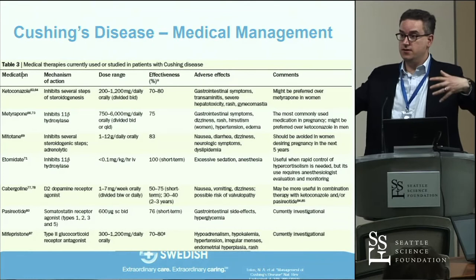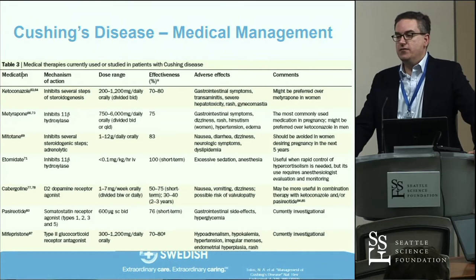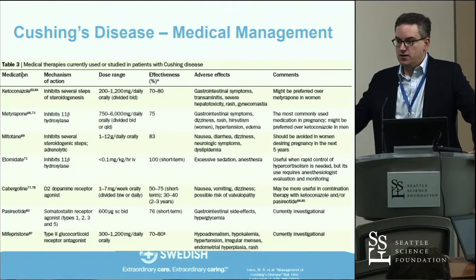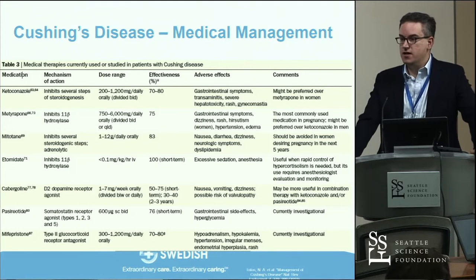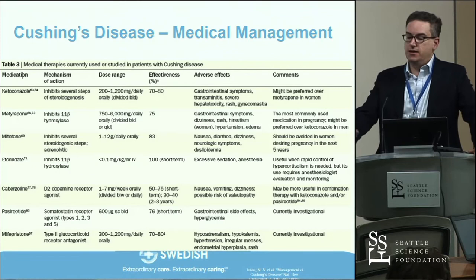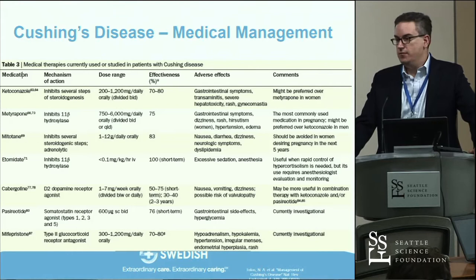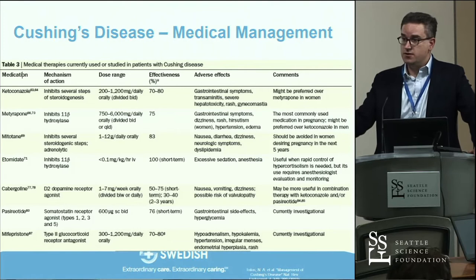For a patient who is image-negative and you've done a hemihypophysectomy based on IPSS results without finding anything obvious at surgery, that person will remain floridly Cushingoid and requires a frank discussion about best treatment. Oftentimes the risks of ongoing Cushing's are higher than the risks of panhypopituitarism, since we can replace all hormones — so radiating the sella, controlling the Cushing's, and putting them on replacement is often the better approach.